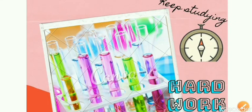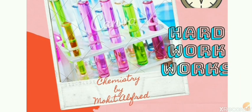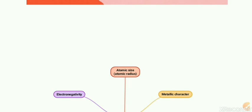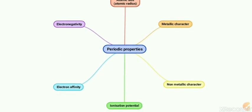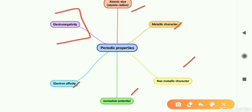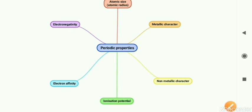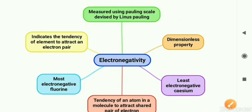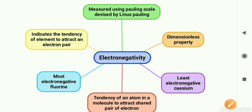Hello everyone, welcome to chemistry class. This is the online class series, part 7 of chapter number one. Dear students, as we have been studying the periodic table and discussing periodic properties, this is the time to discuss the last periodic properties. We will be discussing electronegativity and its trends and variations in the periodic table, followed by question answers of this chapter.